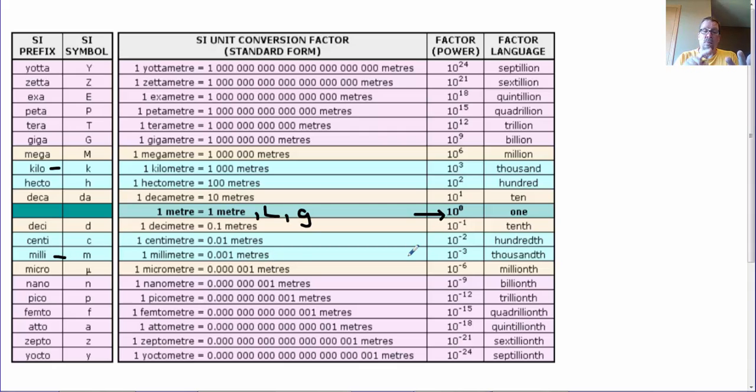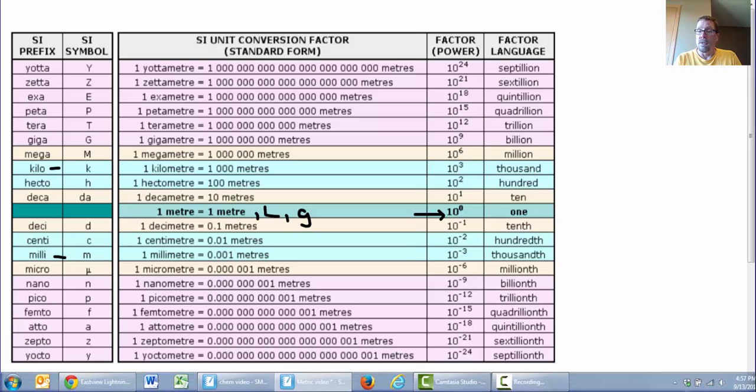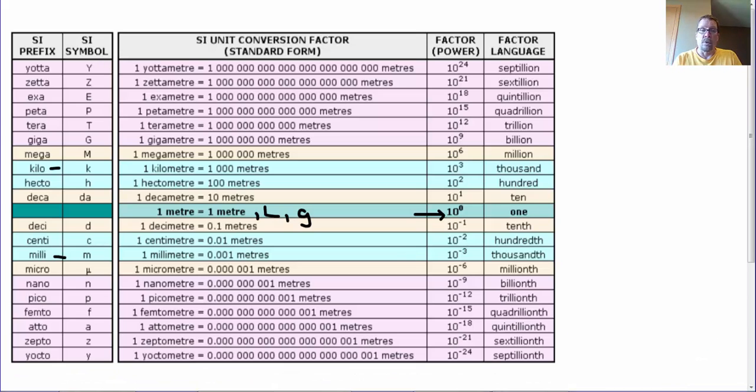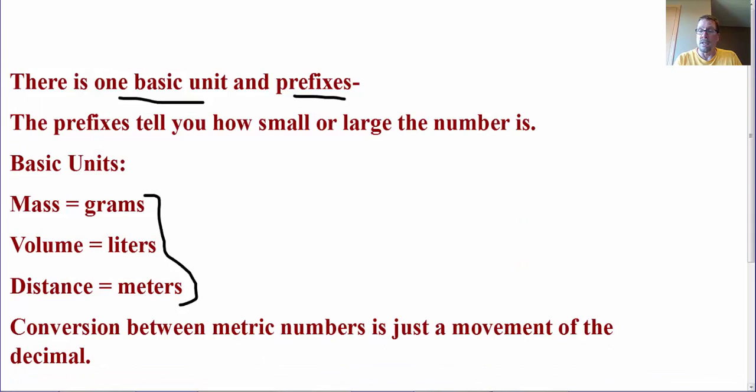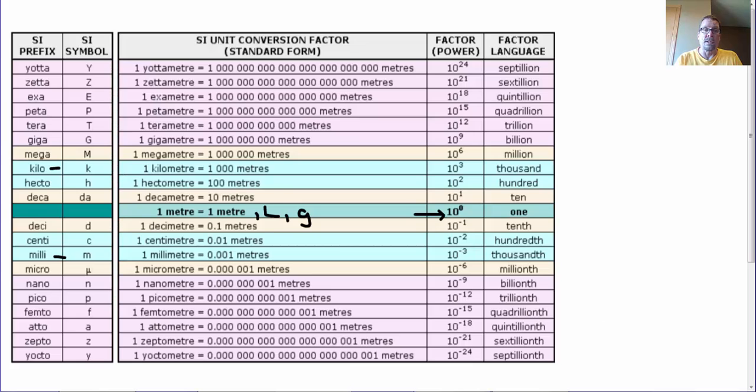So you're down to two things. What am I measuring? Grams, meter, liter. And what's the prefix? How big or small is that number? A much easier way to work through this method. So then as you convert metric numbers, which we're going to do in a minute, it's really just a movement of the decimal.